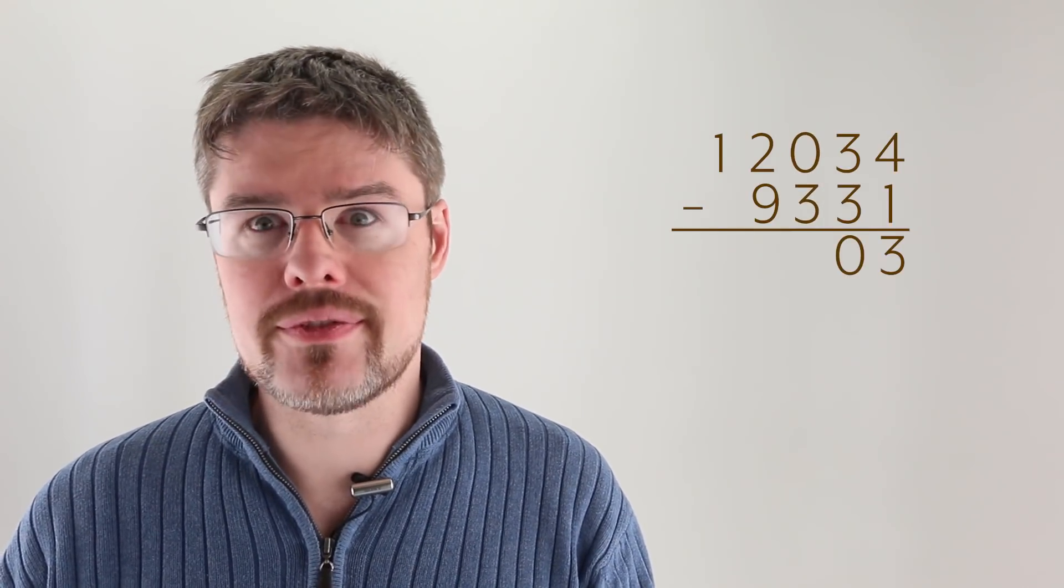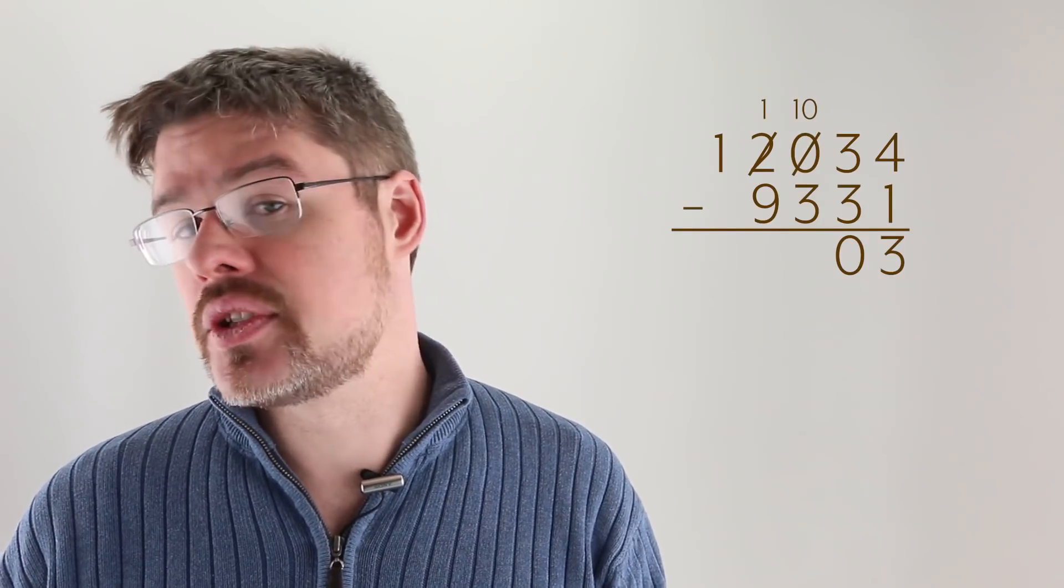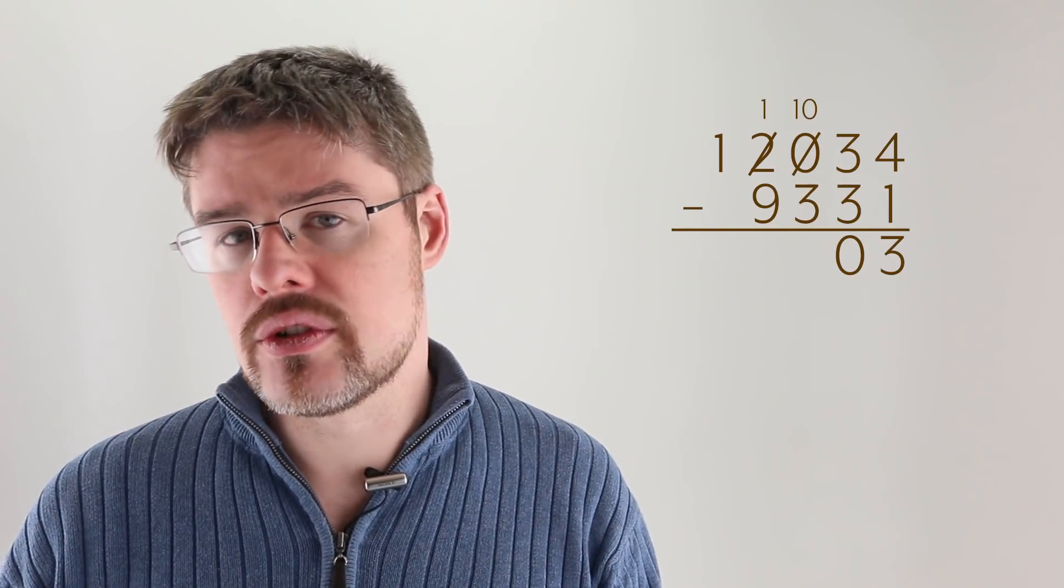The hundreds column seems weird because we have zero hundreds, and then we're trying to take away 3. But if you think about it for a moment, we're just going to do the same thing. We're going to take one from the thousands column, split it into 10 hundreds, and then add that to the zero that's already there, giving us 10. Then we're simply going to subtract 3 hundreds away from the 10 hundreds, leaving us with 700.